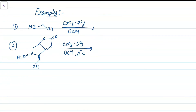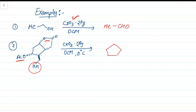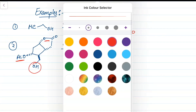In the first example with Collins reagent, a primary alcohol simply forms an aldehyde. In the second example, we have a multifunctional molecule containing an acetate group, an ester group, and a primary alcohol. Because Collins reagent is very mild, it does not touch any other functional group — it selectively oxidizes only the alcohol portion to an aldehyde, leaving all other groups intact.